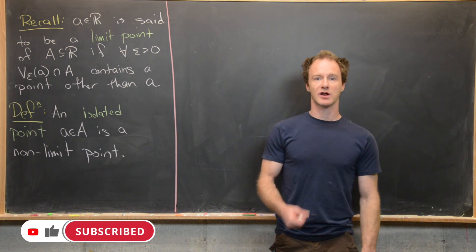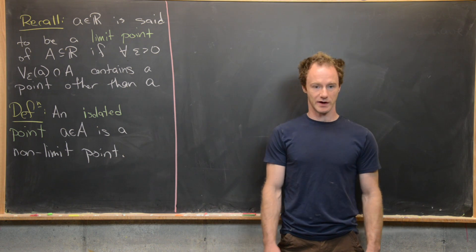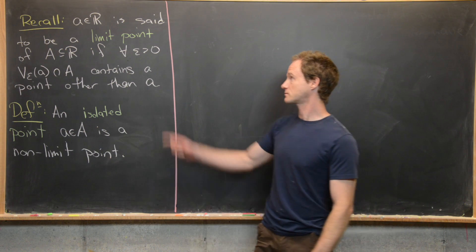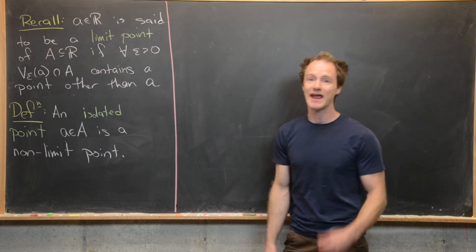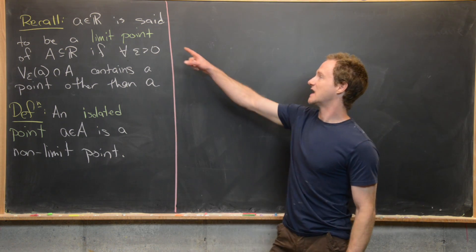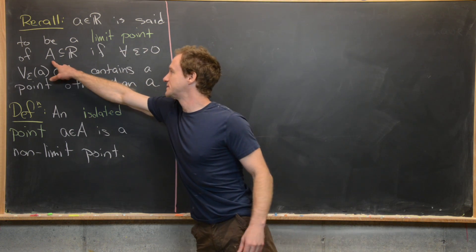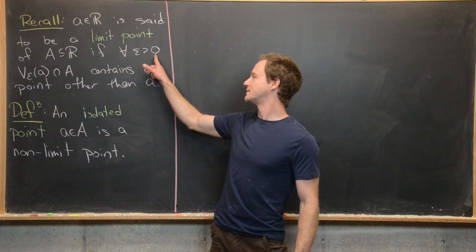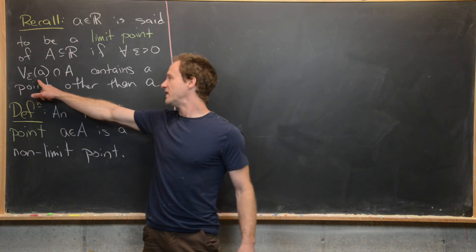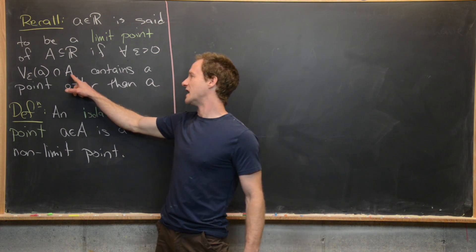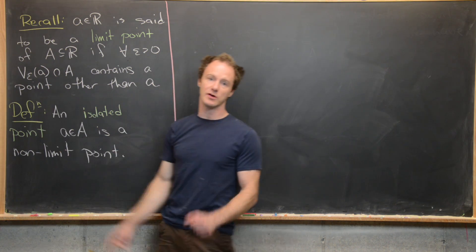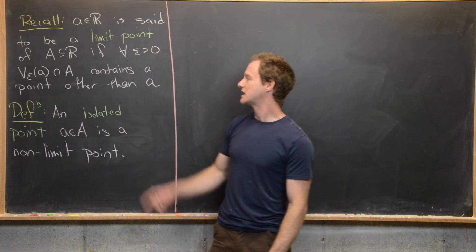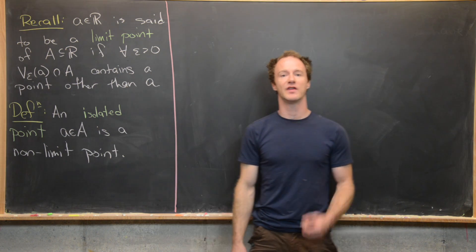In this video, we want to look at the notion of an isolated point. But before we do that, let's recall the definition of a limit point. We say that a real number A is a limit point of a subset of real numbers A, if for all epsilon greater than zero, the epsilon neighborhood of little a intersected with the set A contains a point other than A.